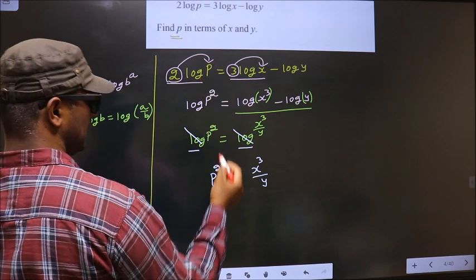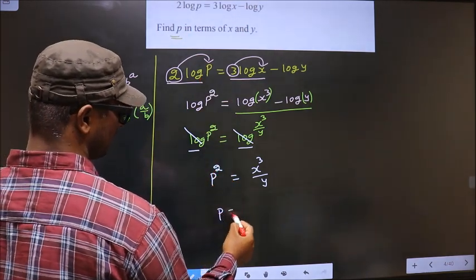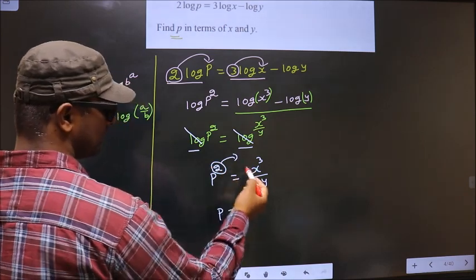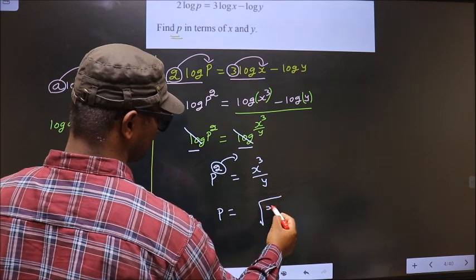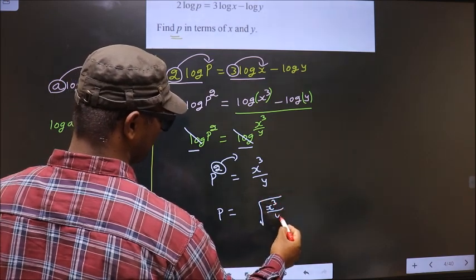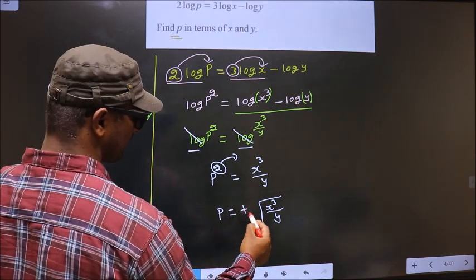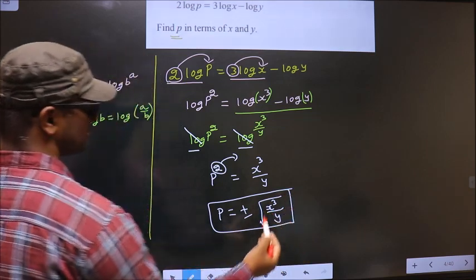They told us to find p. Here we got p square. So to get p we should shift square to the other side. Whenever you shift square to the other side it will become square root x cube by y. Not only that, you should consider both plus or minus. So this is our answer.